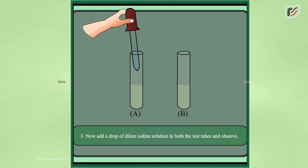3. Now add a drop of dilute iodine solution in both the test tubes and observe.